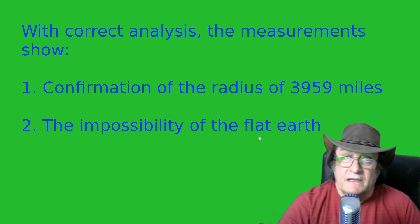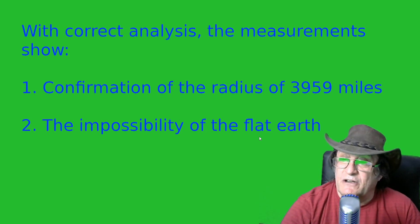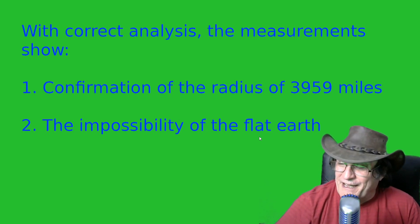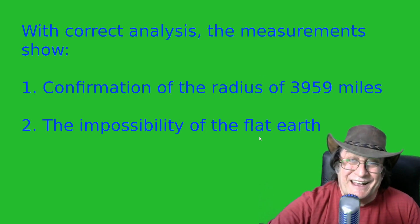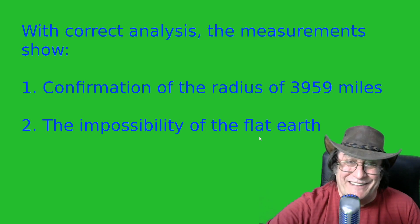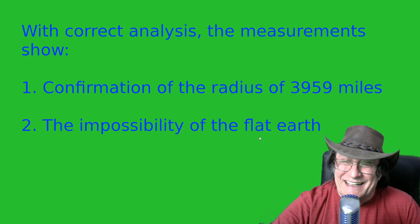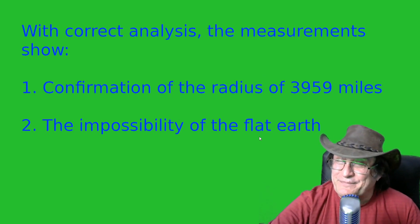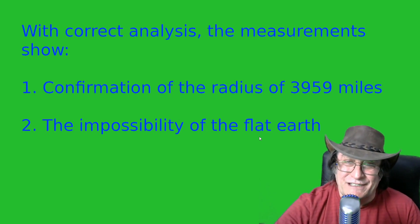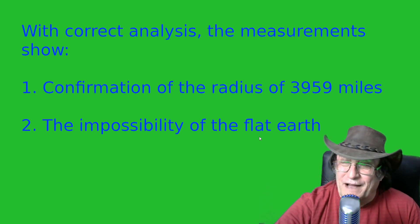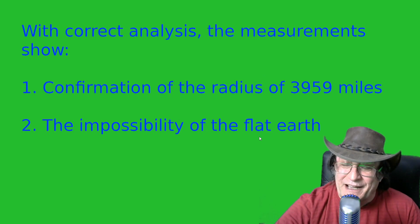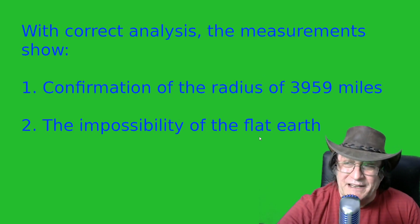So, in summary, with correct analysis, the measurements show confirmation of the radius of 3,959 miles. How many flat earthers understand that he's actually measured the radius quite accurately? The other thing here is that, because of the sheer bulk of upward refraction that's necessary and the lack of a temperature gradient to support that, this points to the impossibility that the earth is flat.